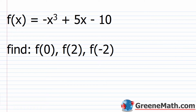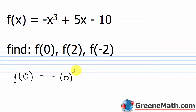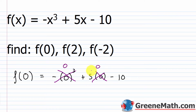Essentially what I'm doing, if I ask for something like f of 0, I'm saying what is the function's value if the independent variable x is 0? So I would plug in a 0 for x: negative 0 cubed plus 5 times 0 minus 10. Those first two terms are 0, so I'd have 0 plus 0 minus 10, which is just negative 10. So f of 0 is negative 10.